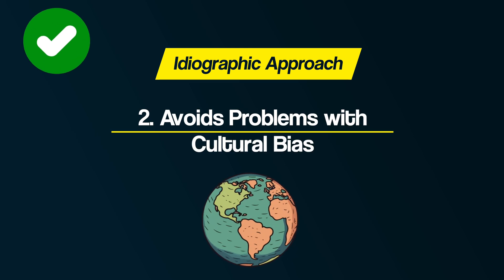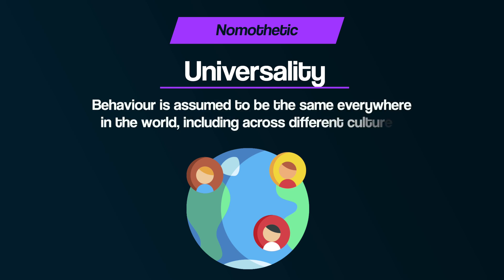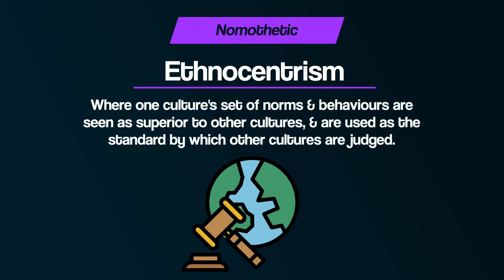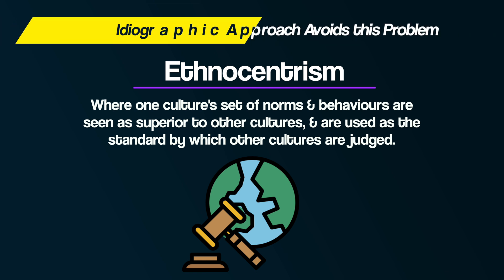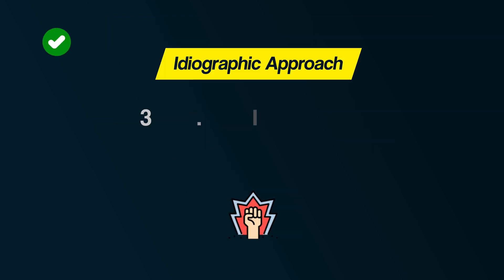Number two: it avoids problems with cultural bias. Because the nomothetic approach tries to make general laws about how we are similar, this can lead to universal laws of behaviour assumed to be the same everywhere in the world, including across different cultures. This can lead to cultural bias, sometimes referred to as ethnocentrism, where one culture's norms and behaviours are seen as superior and used as the standard by which other cultures are judged. Because the ideographic approach does not seek to produce general laws, it avoids this potential problem.